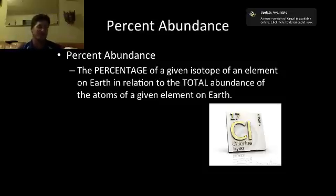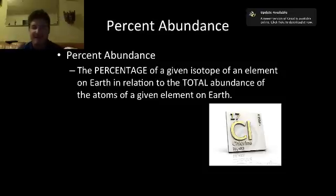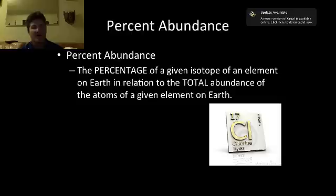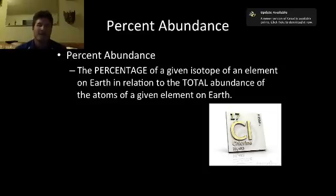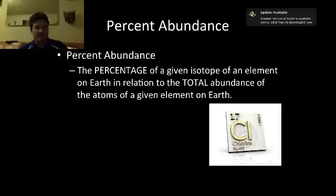What is percent abundance? Percent abundance can be defined as the percentage of a given isotope of an element on Earth in relation to the total abundance of the atoms of a given element on Earth. That might sound a little complicated, so let me see if I can draw you a picture and explain.